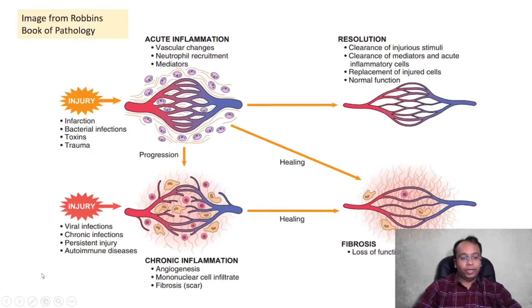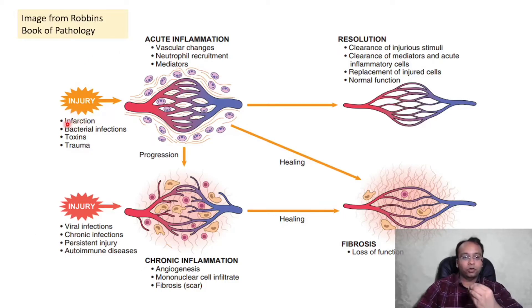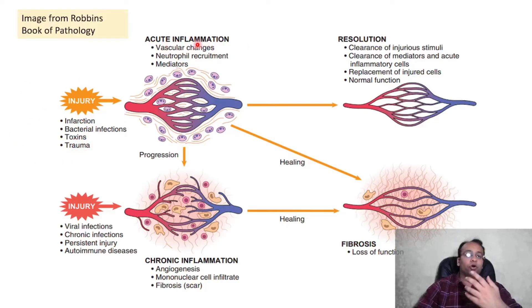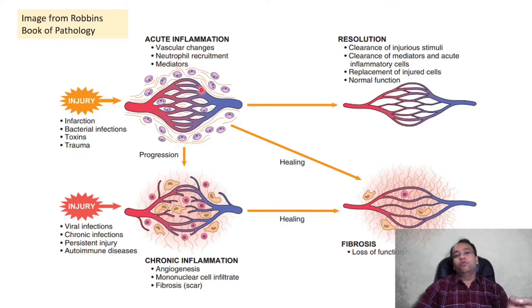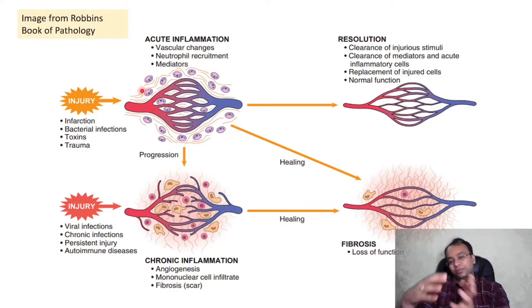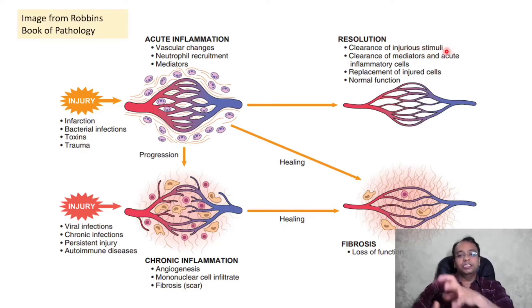This diagram from Robbins' book of pathology clearly demonstrates all the outcomes of acute inflammation. Whenever there is any injury in the form of coagulative necrosis, infarction, bacterial infection, toxin, or trauma — all these injuries will lead to acute inflammation. In acute inflammation there will be vascular changes in the form of vasodilatation and increased vascular permeability, because of which neutrophils will exudate into the surrounding tissue and mediators will be released. Once the offending agent is removed — for example, bacteria cleared by neutrophils through phagocytosis — there will be resolution.